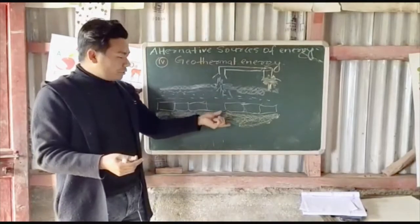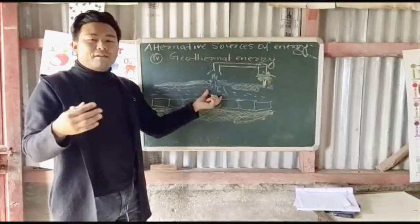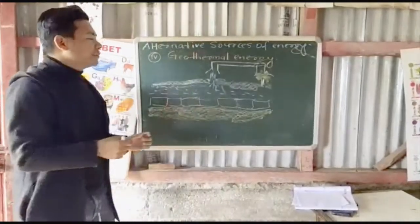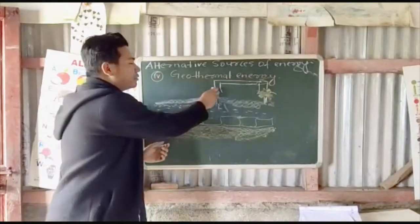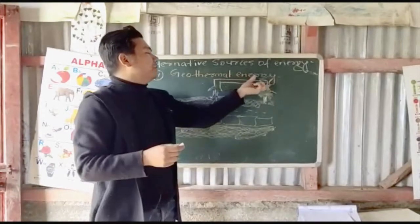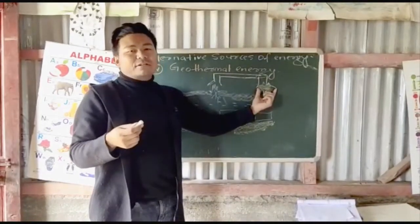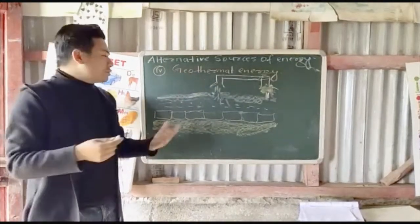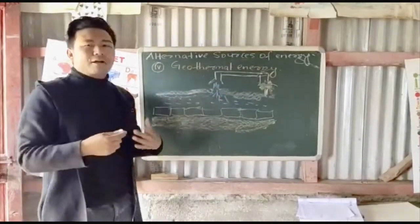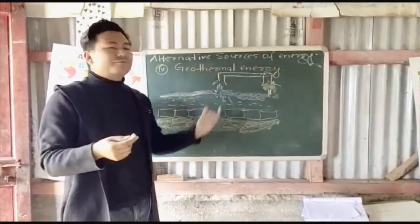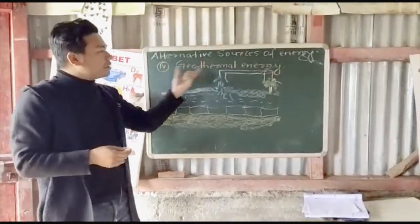When water comes in contact with the rock heated by magma, it turns into steam. This powerful natural steam can be channeled through pipelines and used to generate power. This is how geothermal energy is produced. It is useful, but we have limited resources — that is the main disadvantage of geothermal energy.